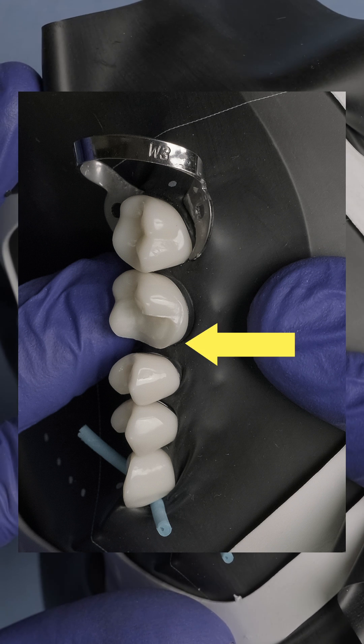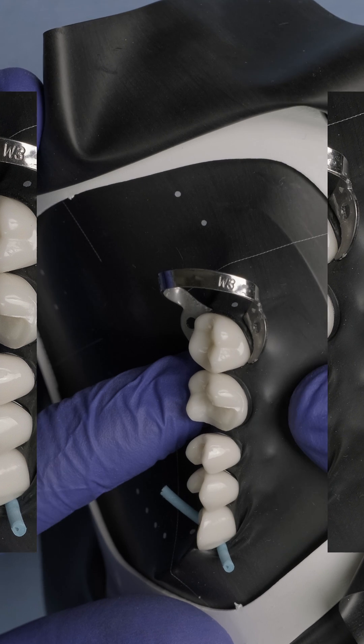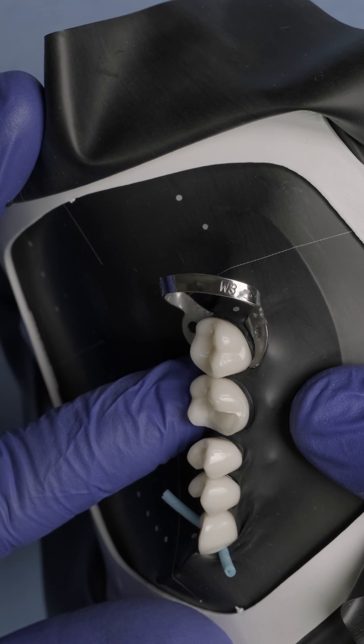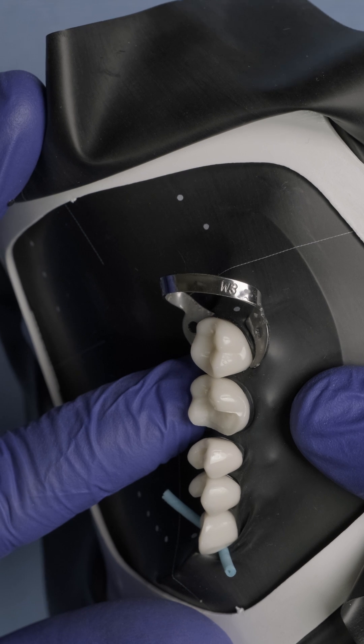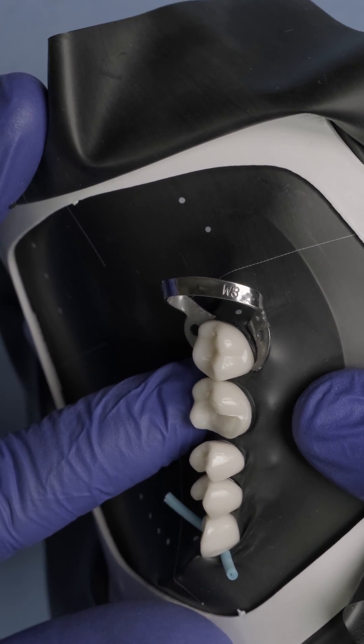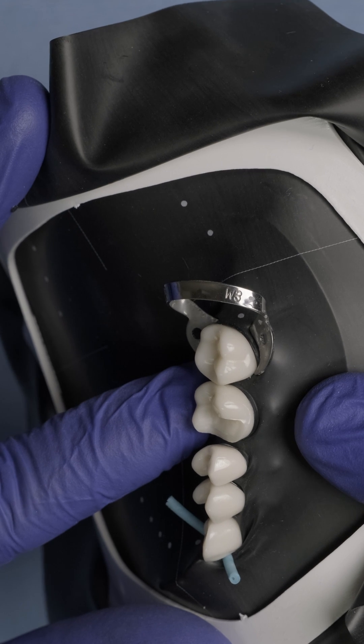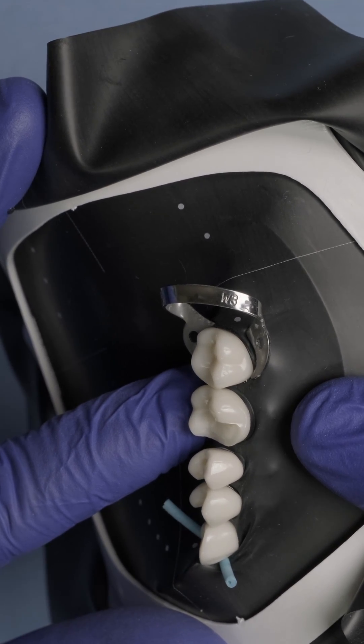Because the rubber dam is inverted correctly, subgingivally, it has pushed that gingival margin more apical, and now you have clean access. There is no bleeding, there is no saliva that's going to come through that rubber dam. This is how you should perform operative dentistry.